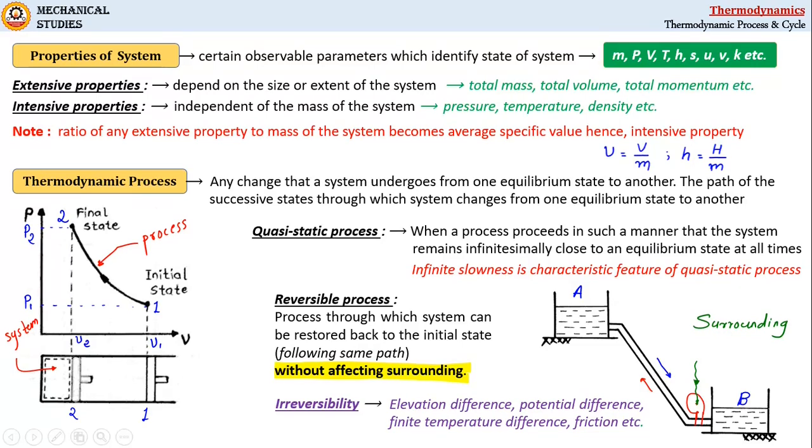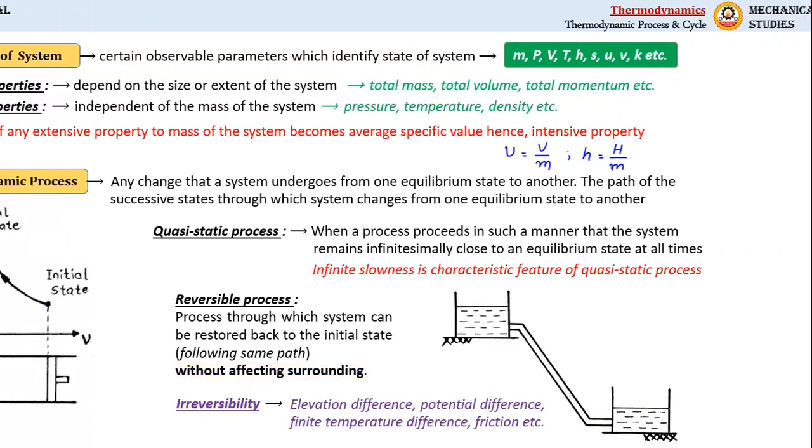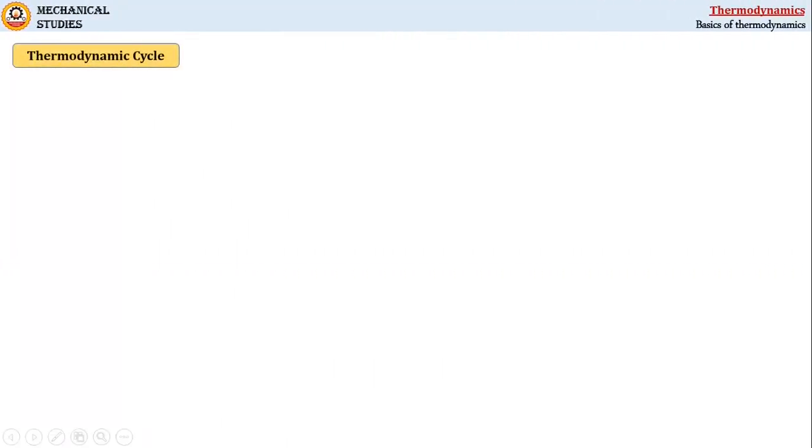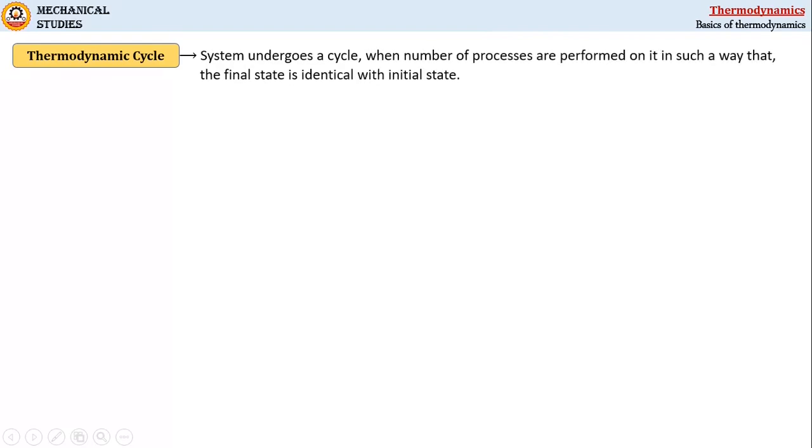We will now go to the next term, that is thermodynamic cycle. We can say a system undergoes a cycle when a number of processes are performed on it in such a way that the final state is identical with the initial state.